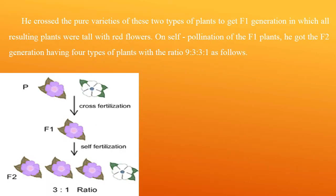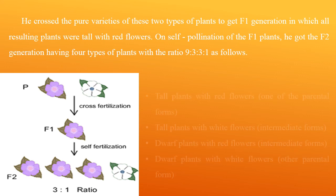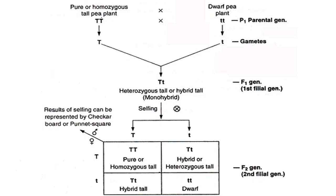He crossed the pure varieties of two types of plants to get the F1 generation, in which all resulting plants were tall with red flowers. On self-pollination of F1 plants, he got the F2 generation having four types of plants in the ratio 9:3:3:1 — 9 tall plants with red flowers, 3 tall plants with white flowers, 3 dwarf plants with red flowers, and 1 dwarf plant with white flowers.